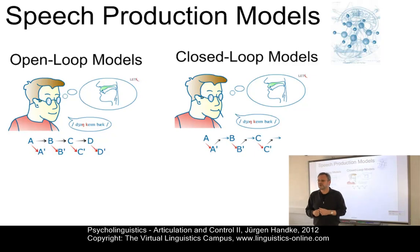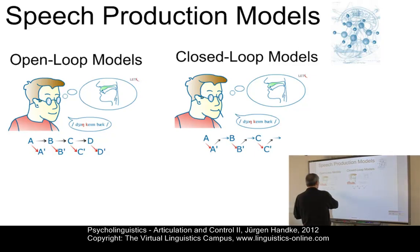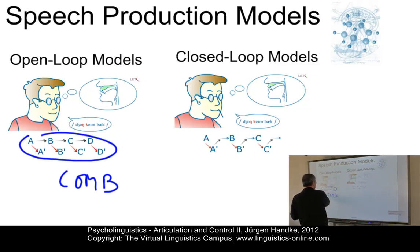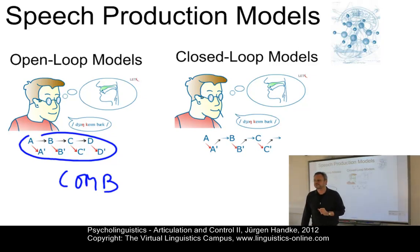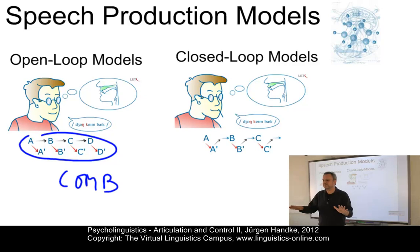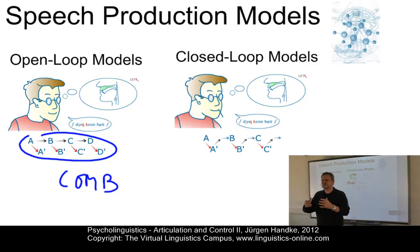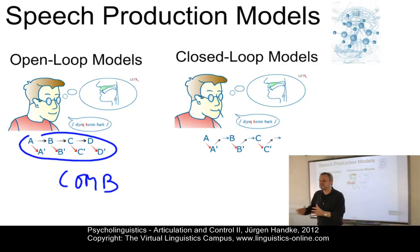Two central models have emerged to answer this question. The first is called the open loop model, also called the comb model, because this sort of model looks like a comb for your hair. This implies that all articulatory planning units — A, B, C, D and their apostrophe counterparts — are retrieved at the same time. There is no feedback between the units. Feedback between these units is impossible; the entire articulatory plan must be available instantaneously.